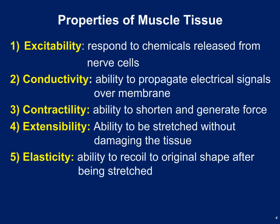Muscle tissue is also extensible — it can stretch out and return to its original shape after contracting. Finally, muscle has to be elastic: it has to be able to snap back to its original shape without injury. So all five of these — excitability, electrical conductivity, contractility, extensibility, and elasticity — are properties of muscle tissue.